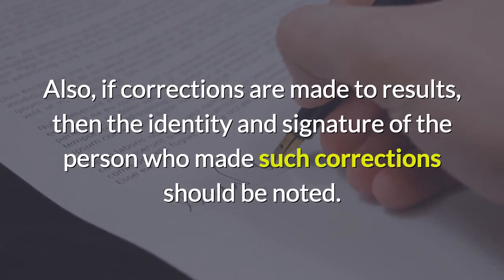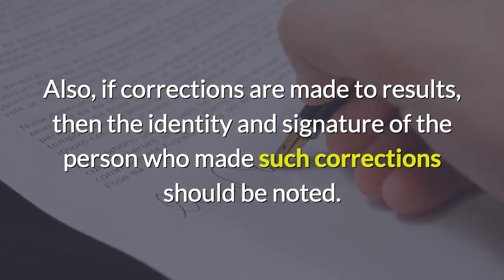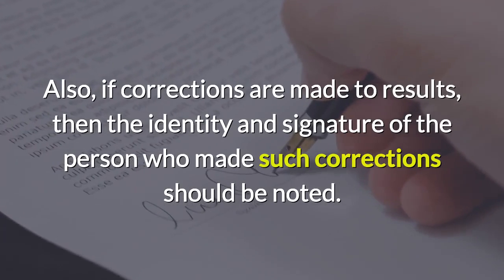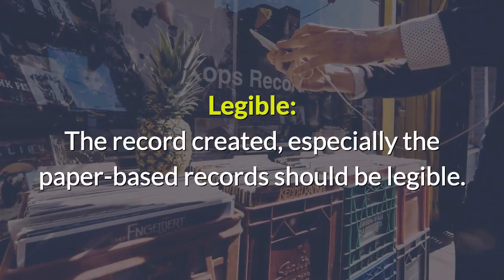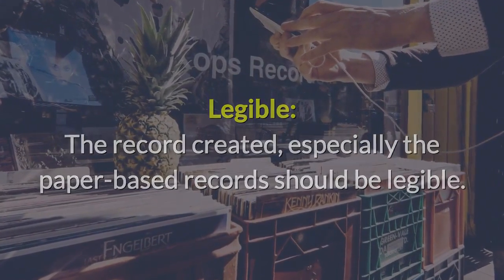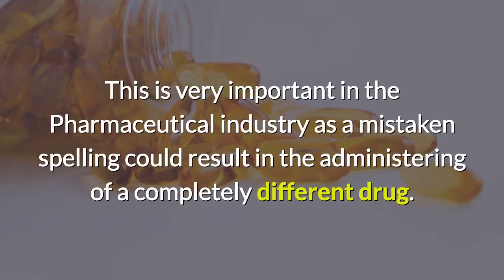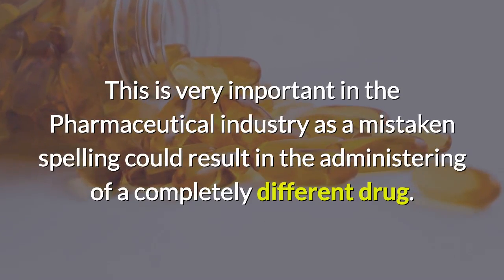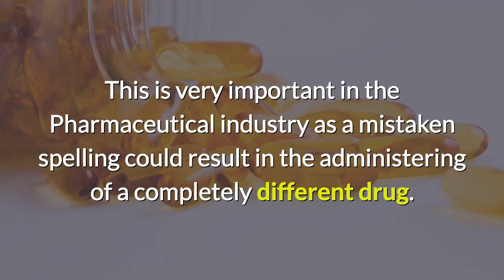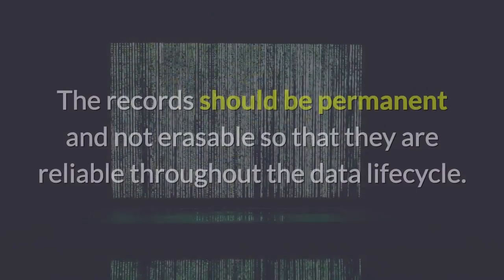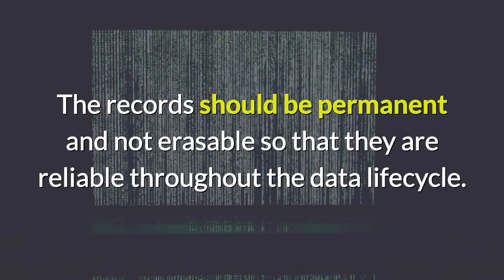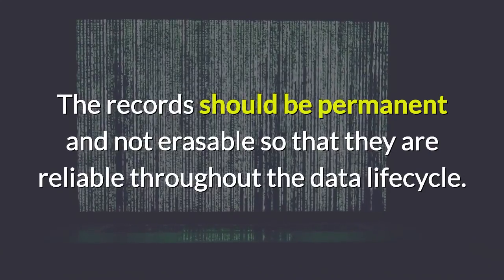The person taking the samples should mention the time of taking the samples along with their name and signature. Also, if corrections are made to results, then the identity and signature of the person who made such corrections should be noted. Legible: the records created, especially paper-based records, should be legible. This is very important as a mistaken spelling could result in the administering of a completely different drug. Records should be permanent and not erasable so that they are reliable throughout the data life cycle.